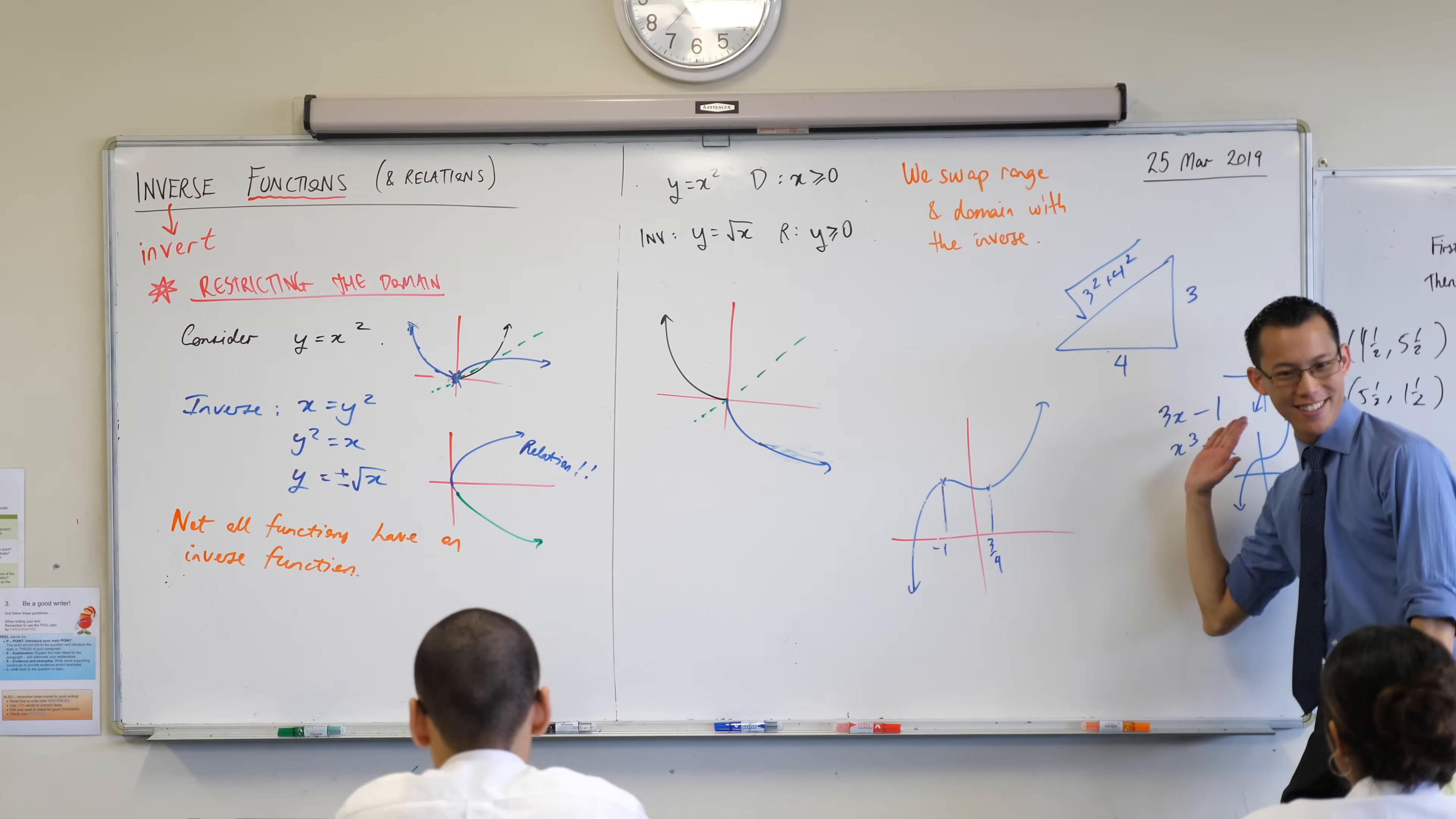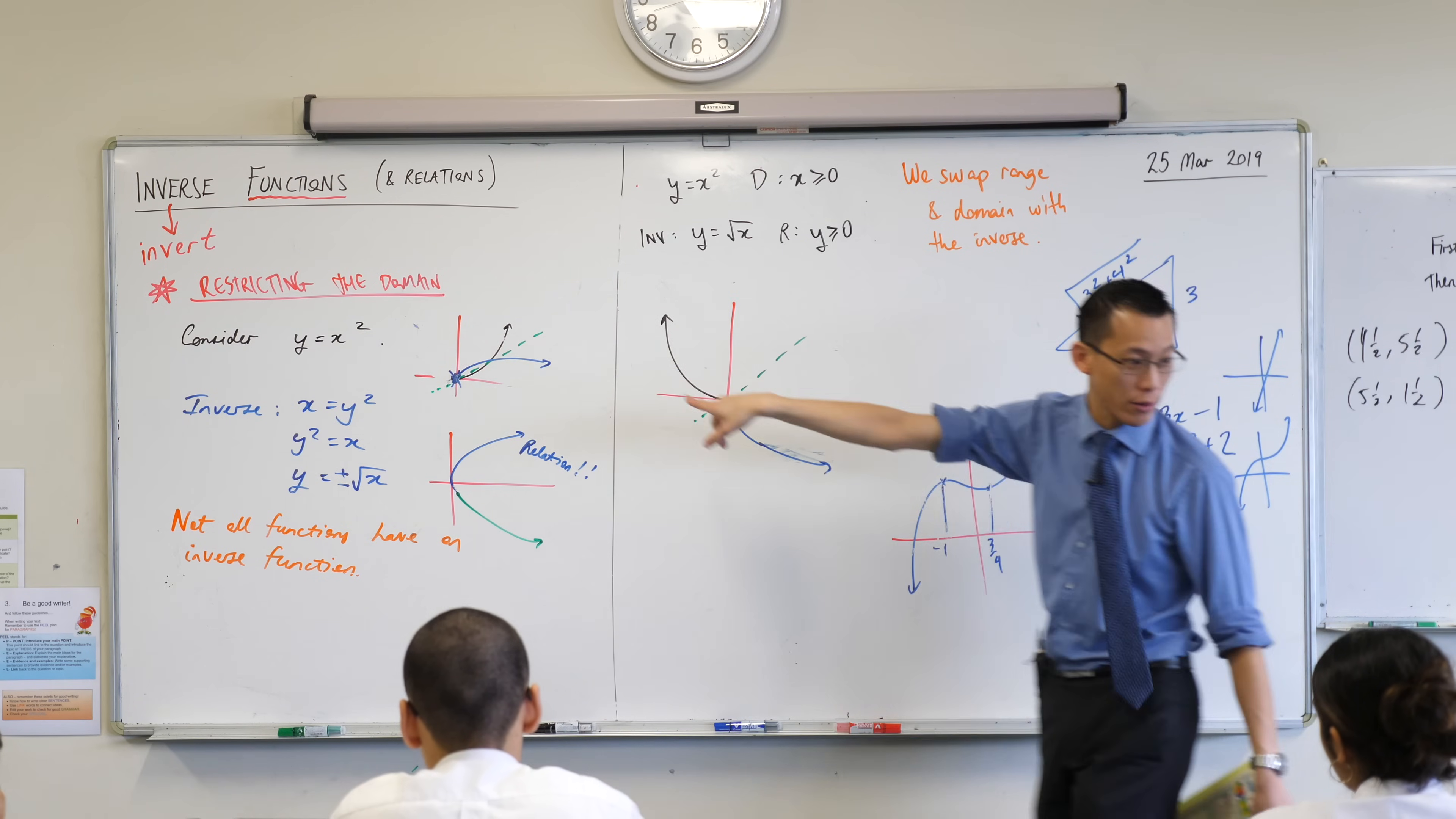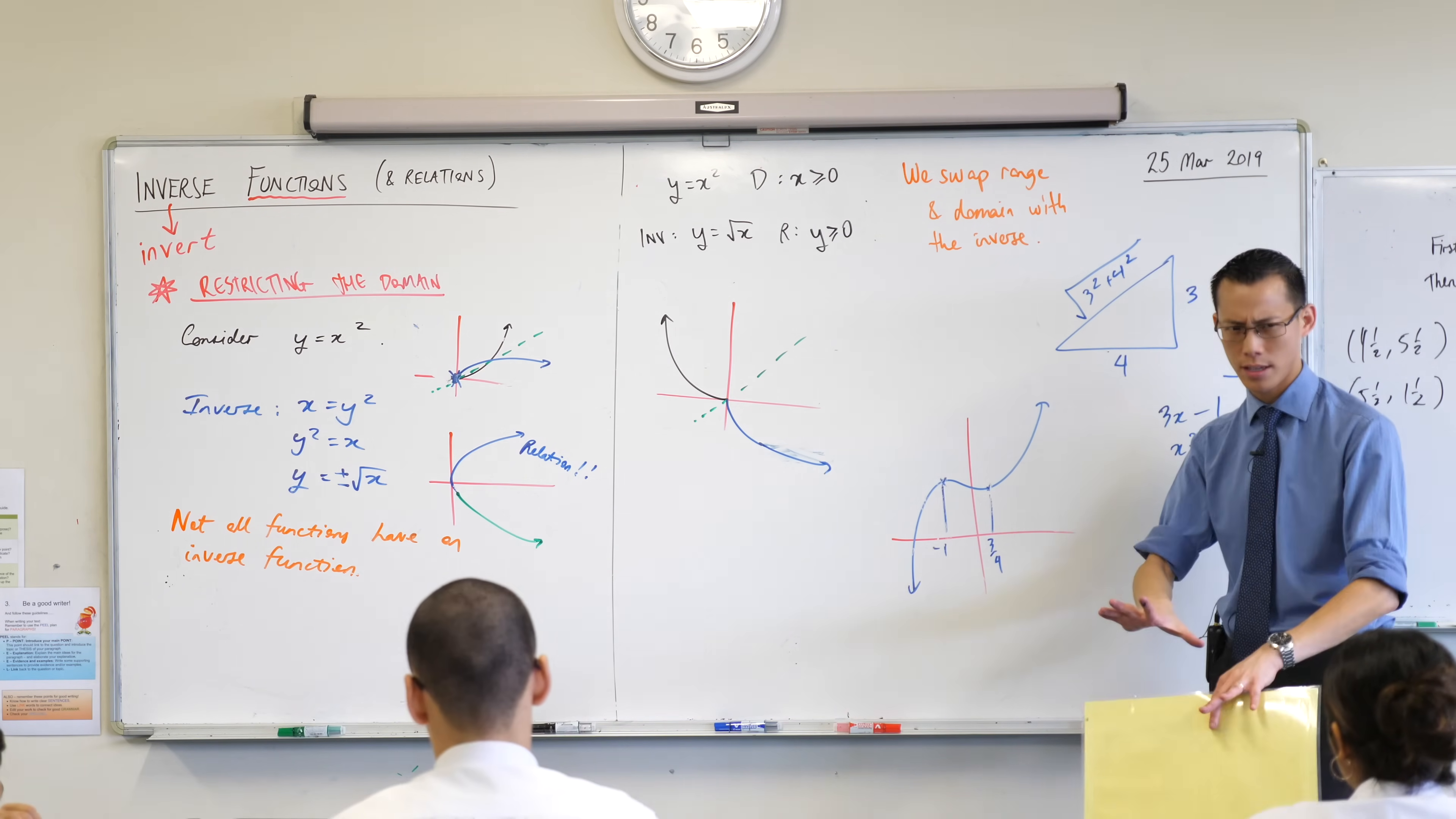Yeah, over here. This part here looks just like the part that we restricted for the x squared graph. So you can actually pick any of these bits and you'll get an inverse function out of it. Does that make sense?